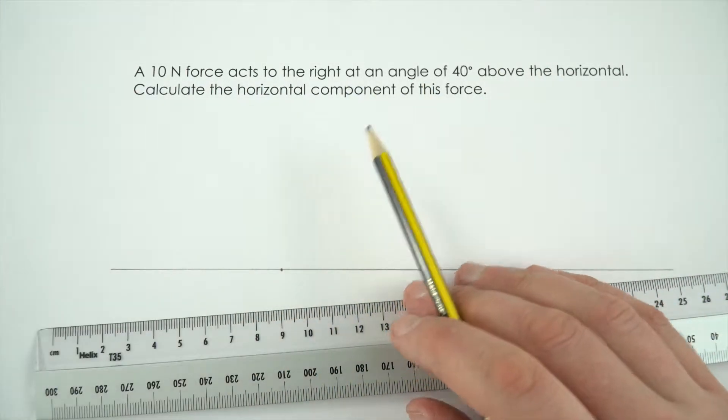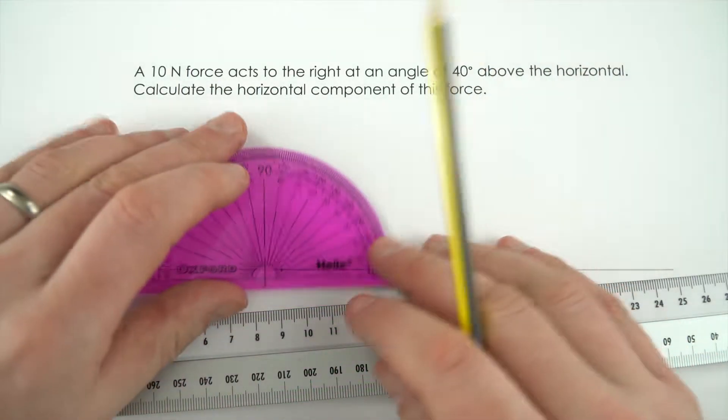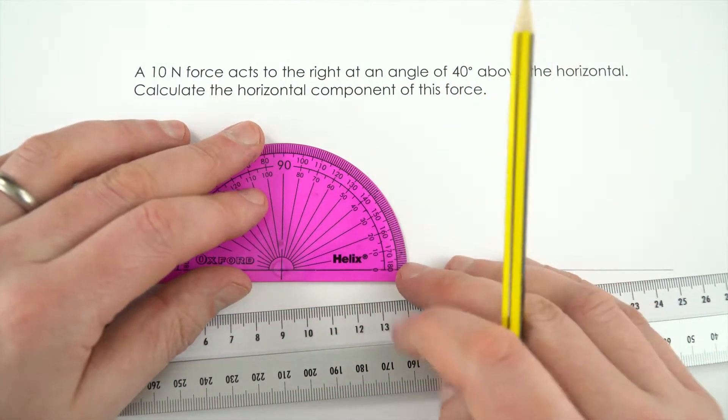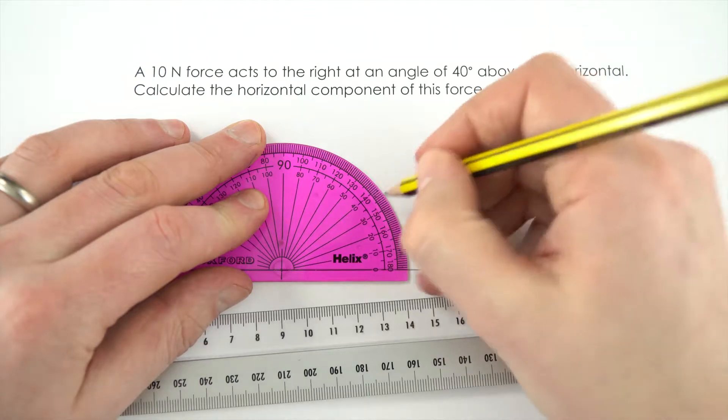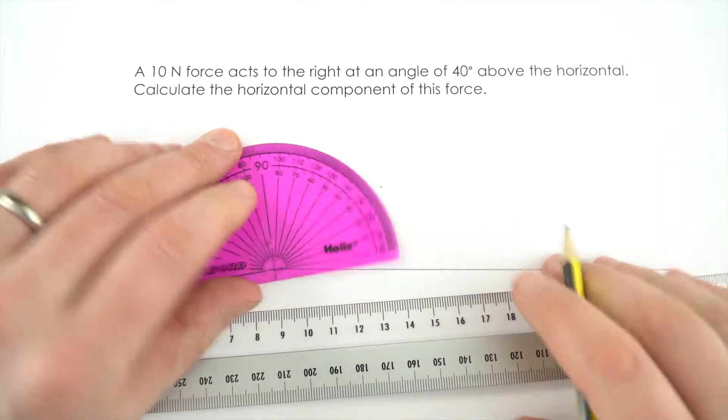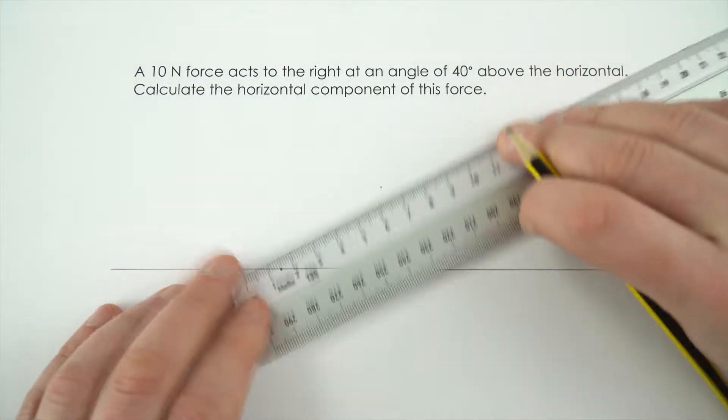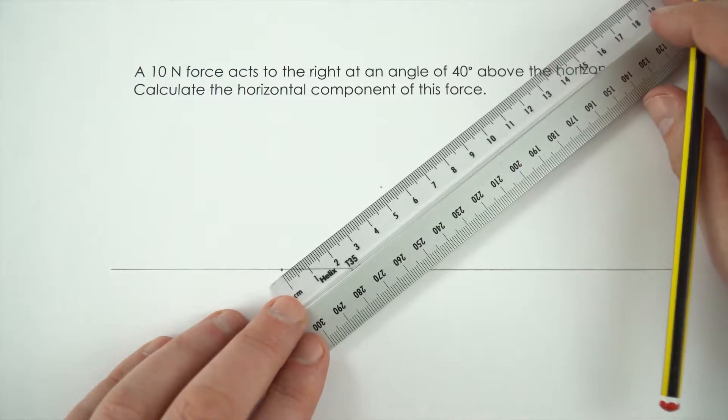I could just sketch it out but I've got the equipment I need so I'm going to draw an accurate diagram. Using my protractor, if that's 180 then 140, that's 40 degrees, and I'm going to do a 10 centimeter long line.